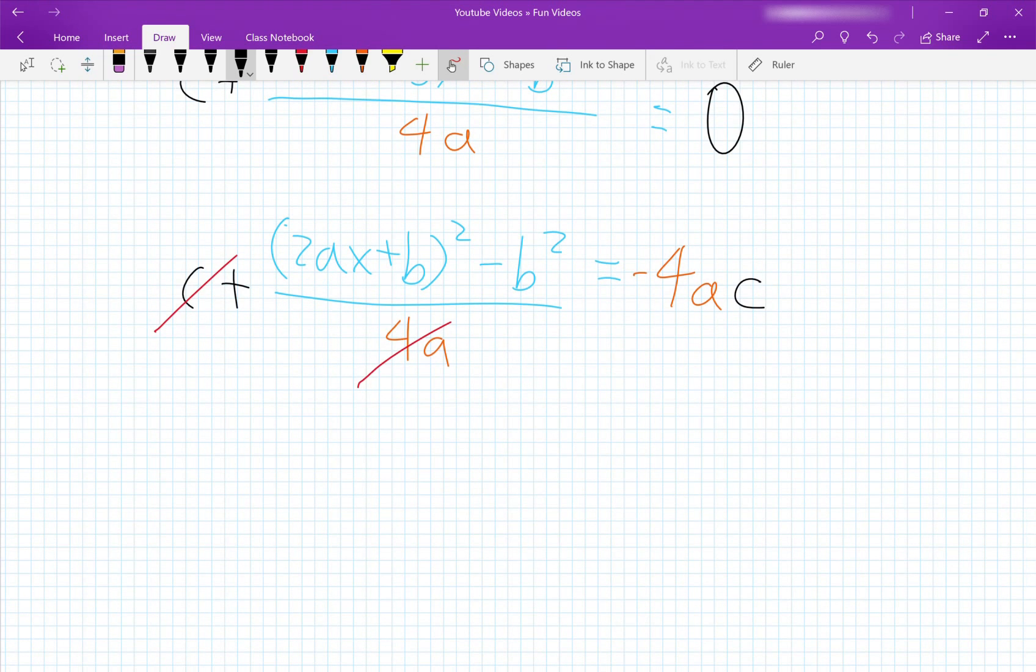Now we can add b squared to the other side, and that will make the equation (2ax plus b) squared, I think you can tell where it's going now, b squared minus 4ac.